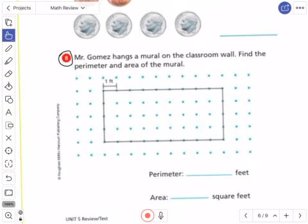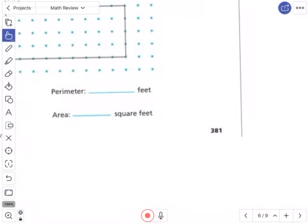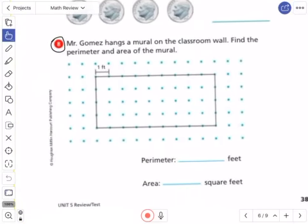This is page 381, number eight. Mr. Gomez hangs a mural on the classroom wall. Find the perimeter and area of the mural. Remember that perimeter is the outside and area is the inside, and there are different ways to do your perimeter and area.